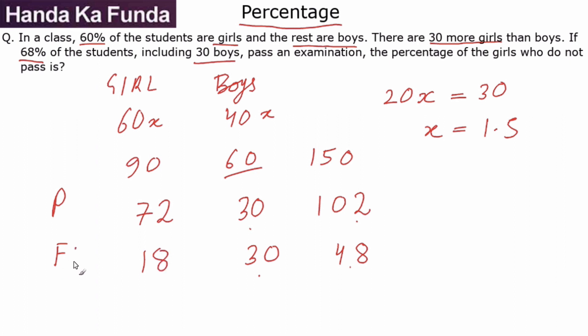What am I asked? The percentage of girls who do not pass. So how many do not pass? 18 do not pass out of a total of 90, which is nothing else but one-fifth of the girls have not passed, or we can say 20 percent of the girls have not passed, or 20 percent will be my answer.